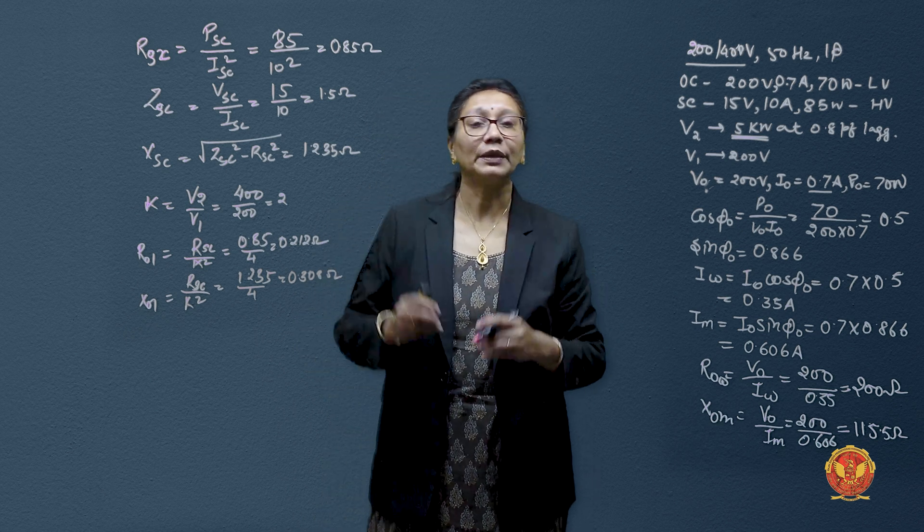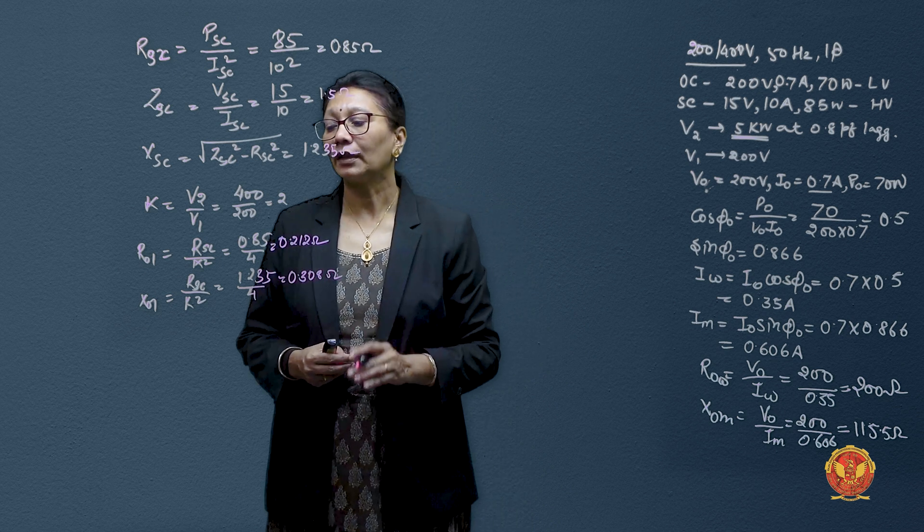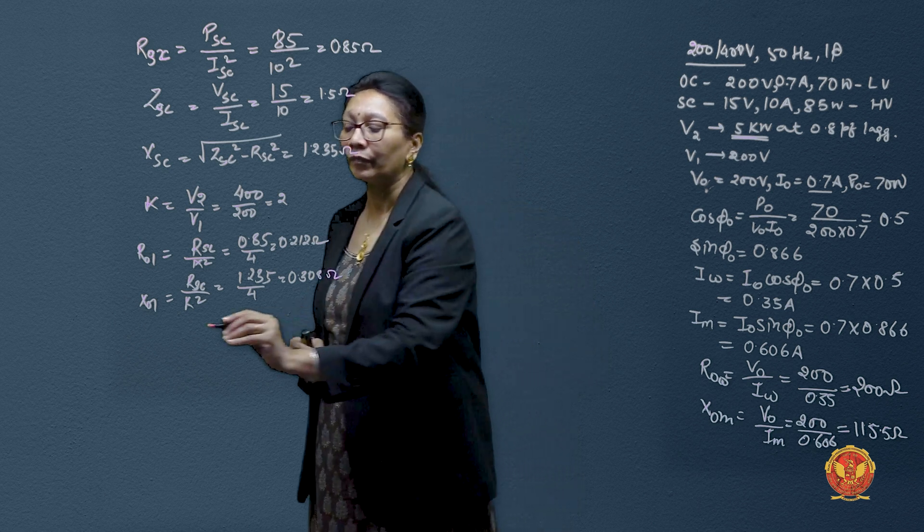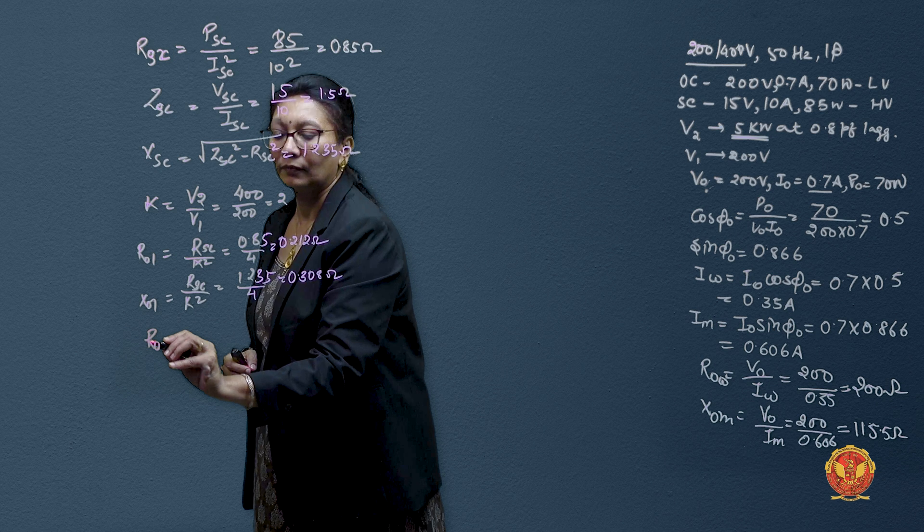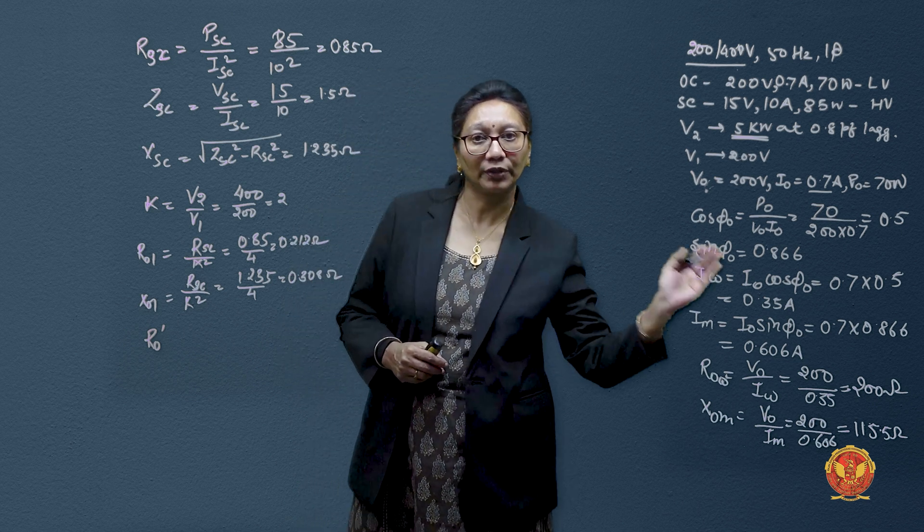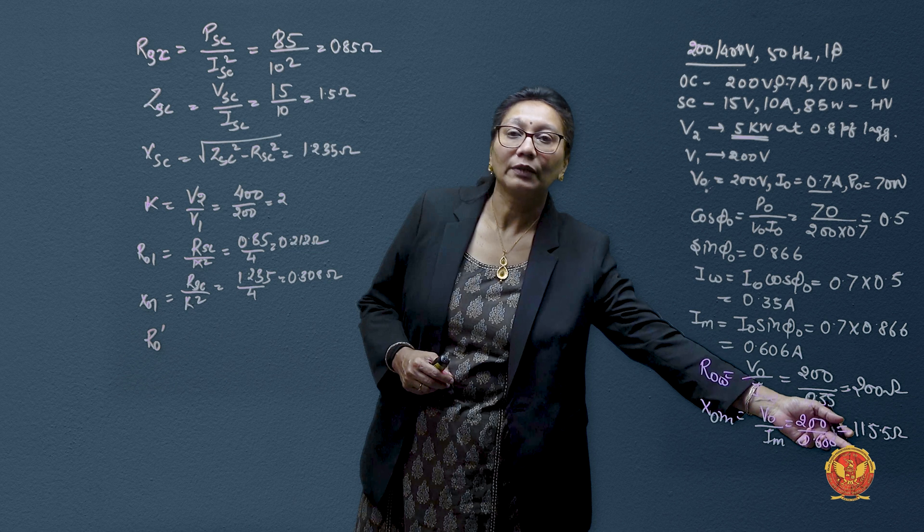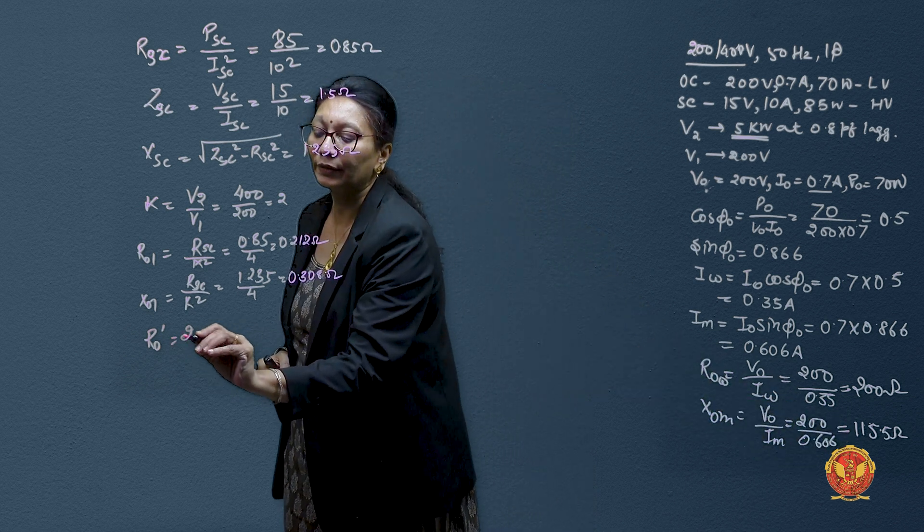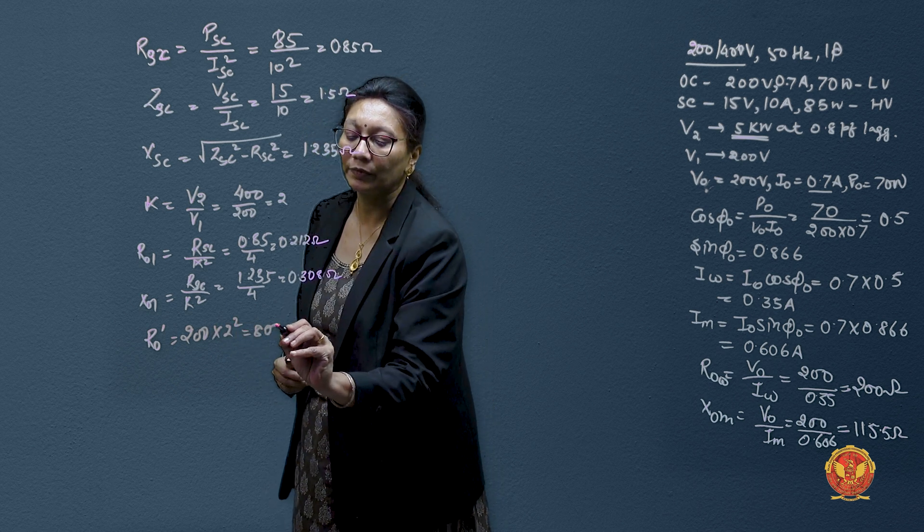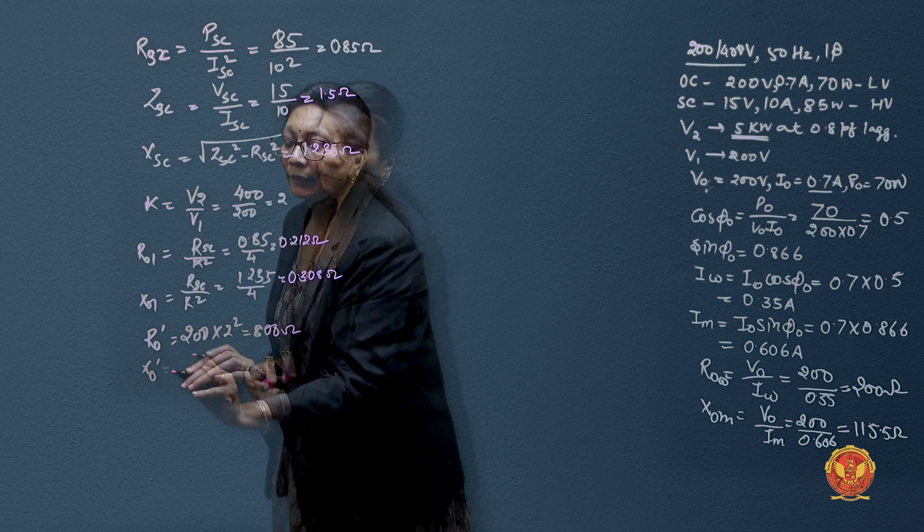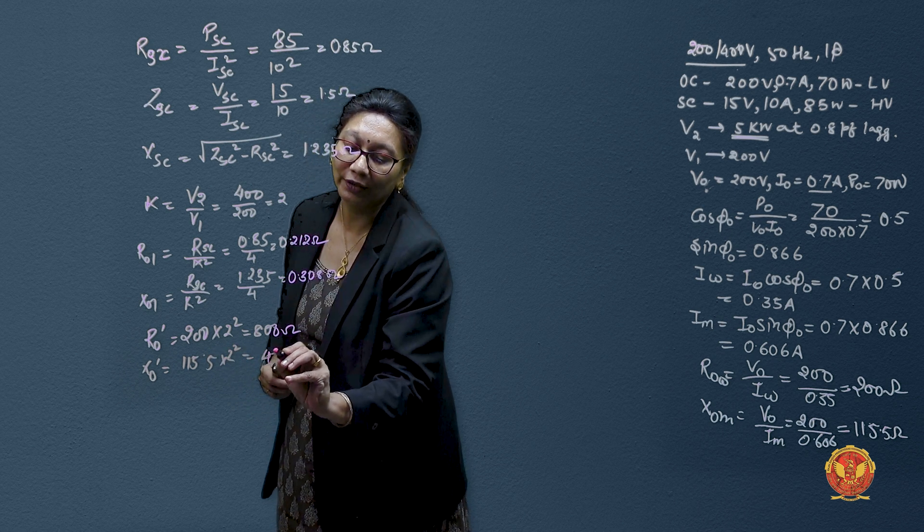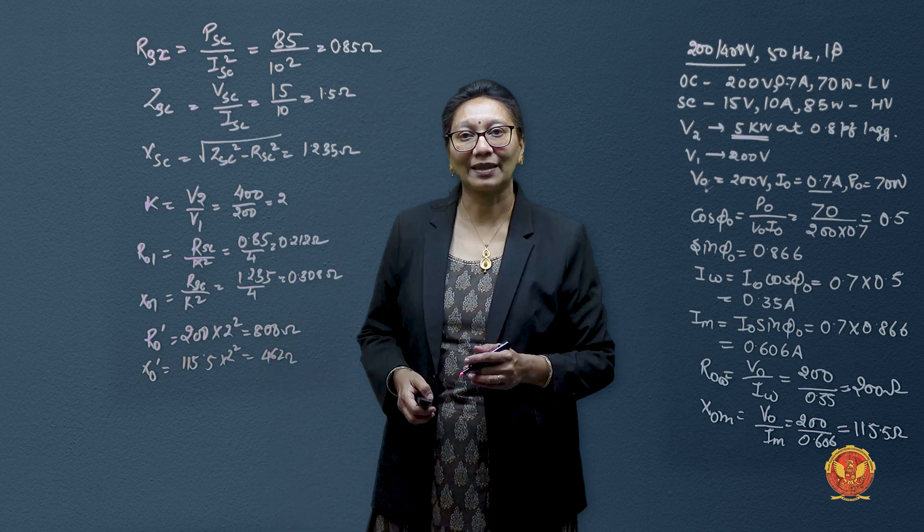Now if we want to refer these parameters to secondary side, we have to multiply it by K square. R0 was 200 ohms and X0 was 115 ohms. So these are now 200 into 2 square and this gives us 800 ohms. And similarly, X would be 115.5 into 2 square and this gives us 462 ohms. On high voltage side, all impedances are visible.